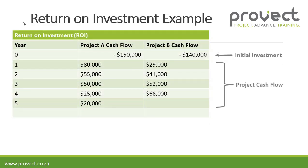We start off with project A and project B and we have a cash flow for both projects. For project A, we've got an initial investment of $150,000 and then we've got a cash flow for years 1, 2, 3, 4, and 5 for each year, which is the income minus expenses.